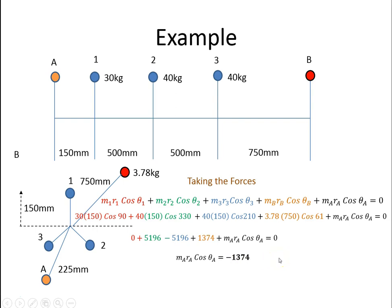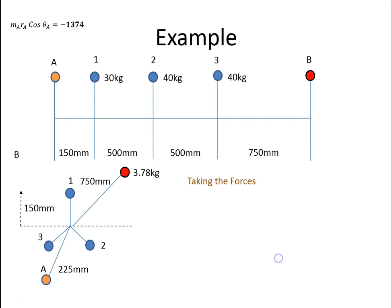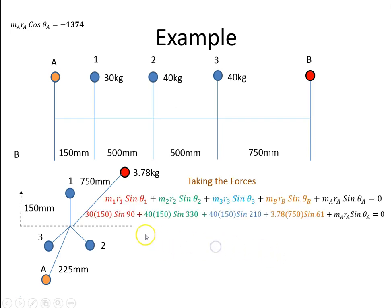I'm going to do the same for the vertical component of the forces, just getting the sine. I'll put those values in, and MaRa sine θA works out to be minus 979.5.